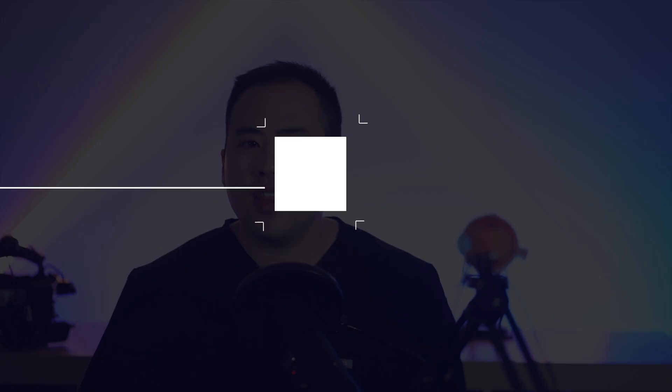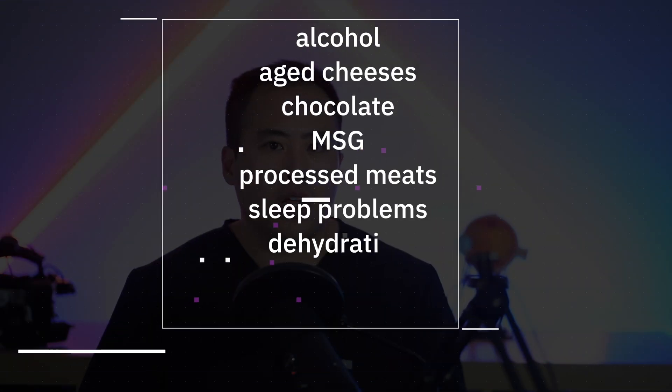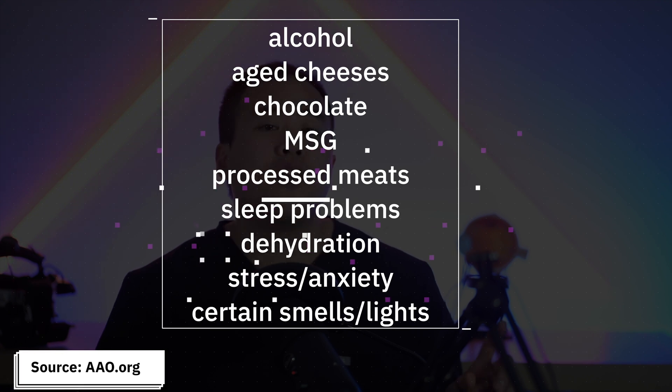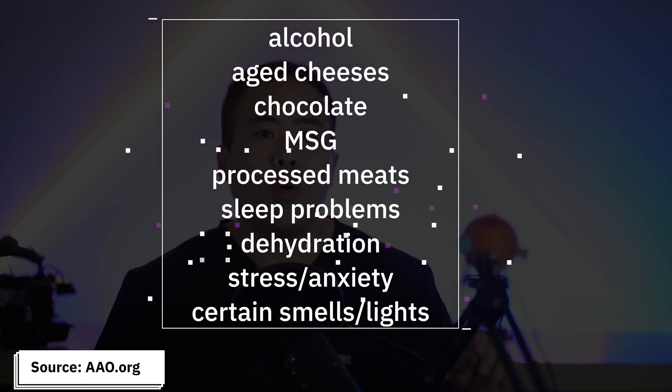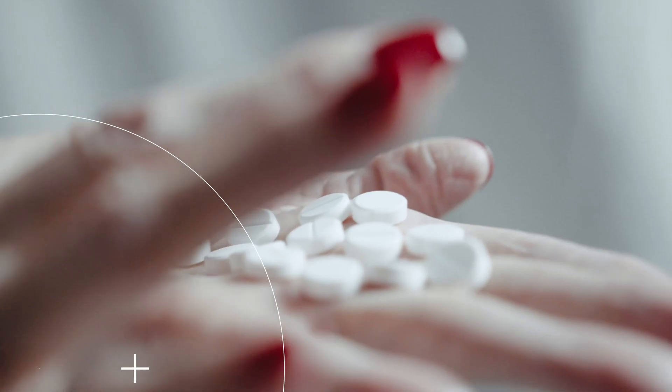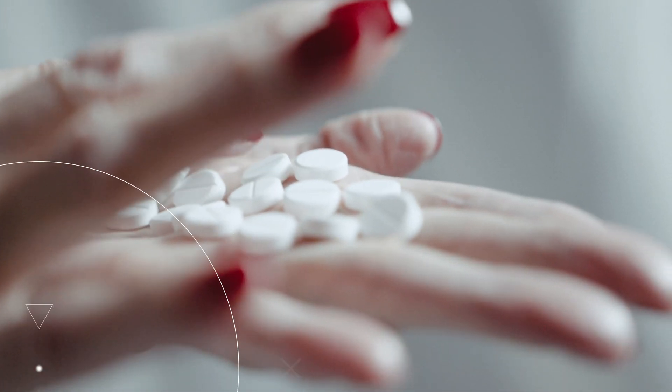And also, how do we treat migraines? Key thing is prevention — find out what triggers your migraines and avoid them. But what happens if you're having a migraine? Advil and aspirin.